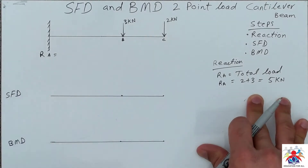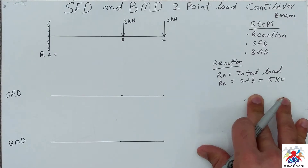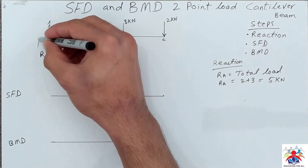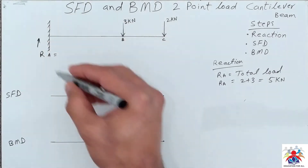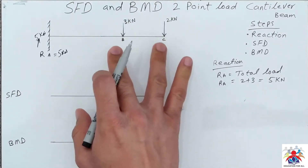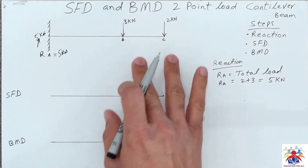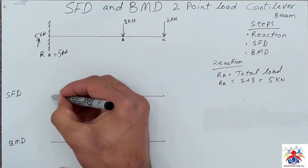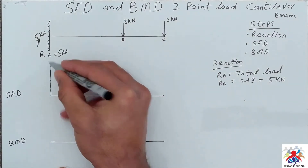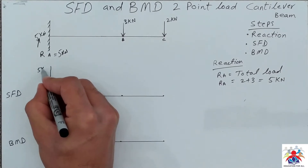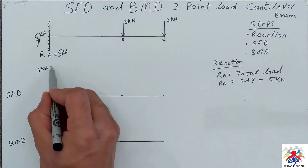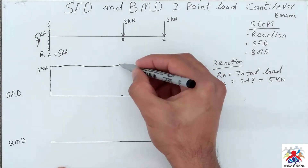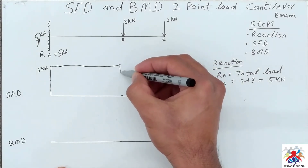Once we have calculated our reaction at point RA, based on this number we can draw the shear force diagram. As we can see, 5 kilonewtons is acting upward and the 3 and 2 kilonewton loads are acting downwards. So 5 kilonewtons will go upwards — roughly 5 kilonewtons here — then we move to point B and it will come down by 3 kilonewtons.